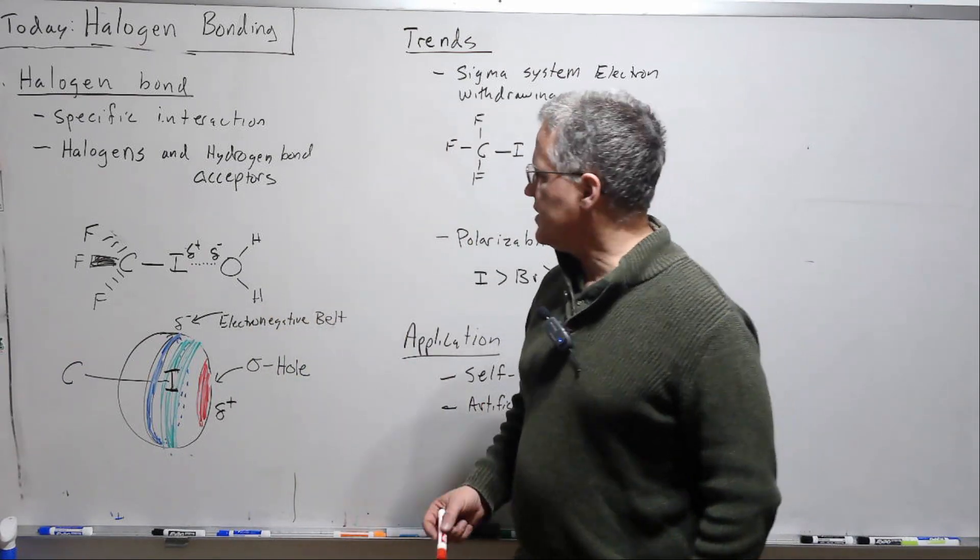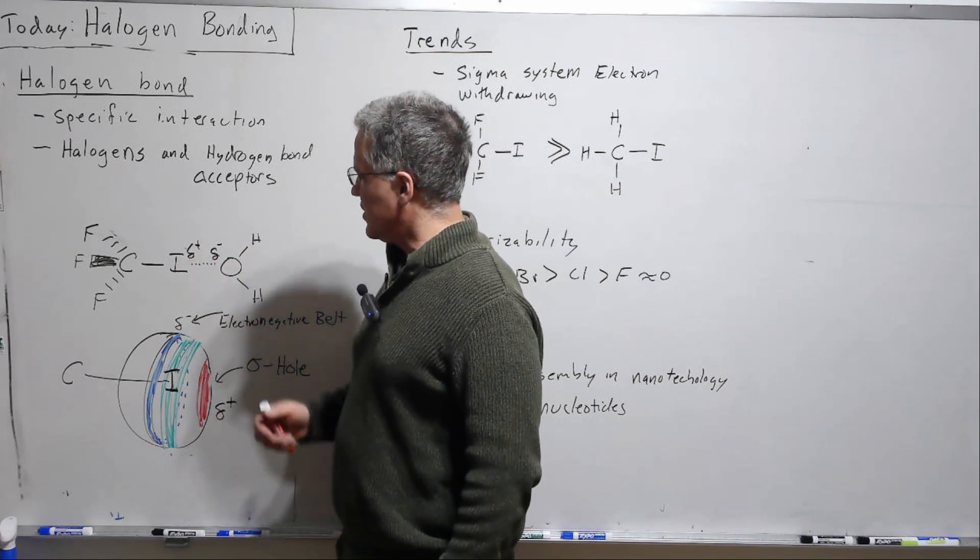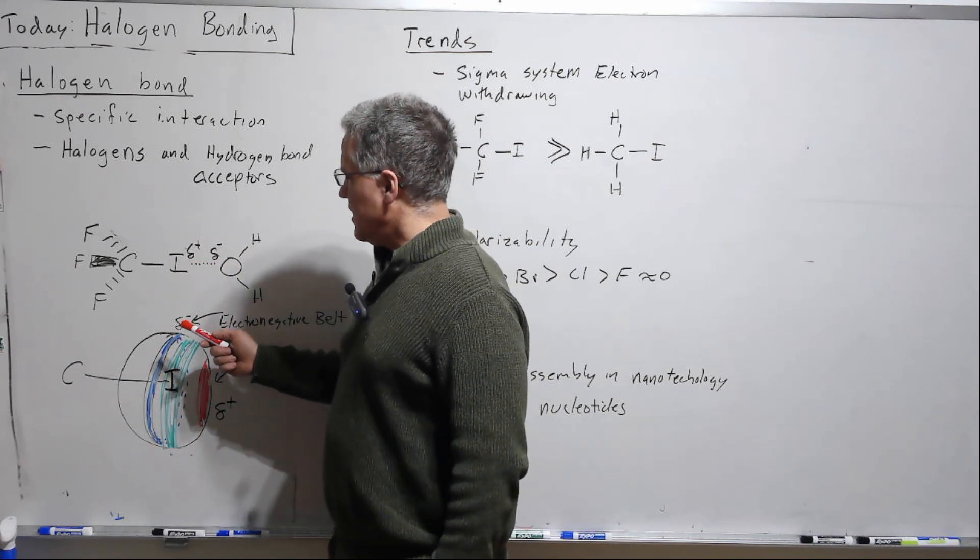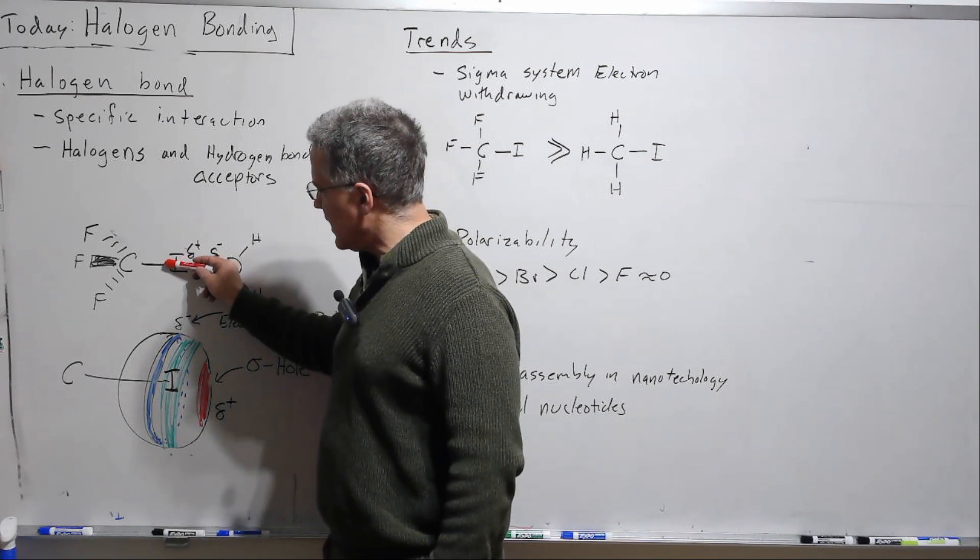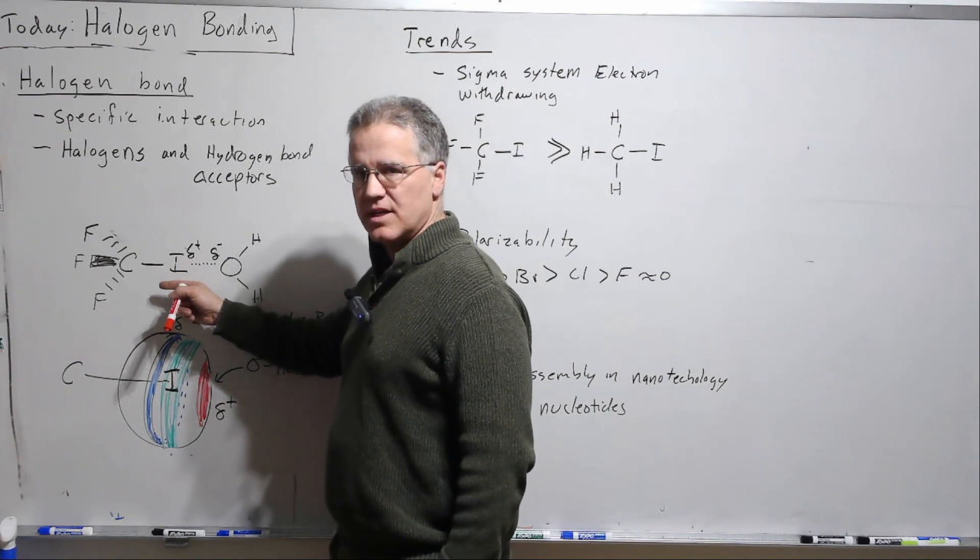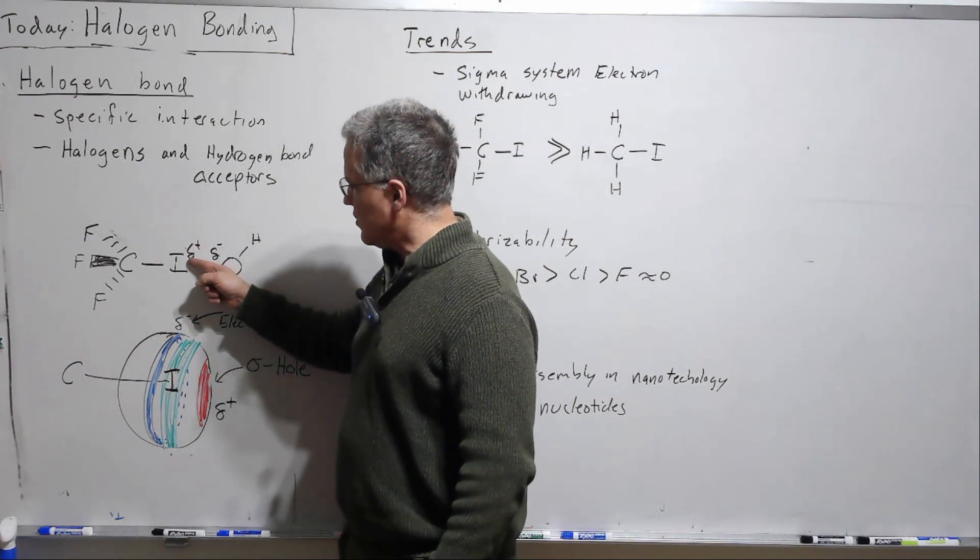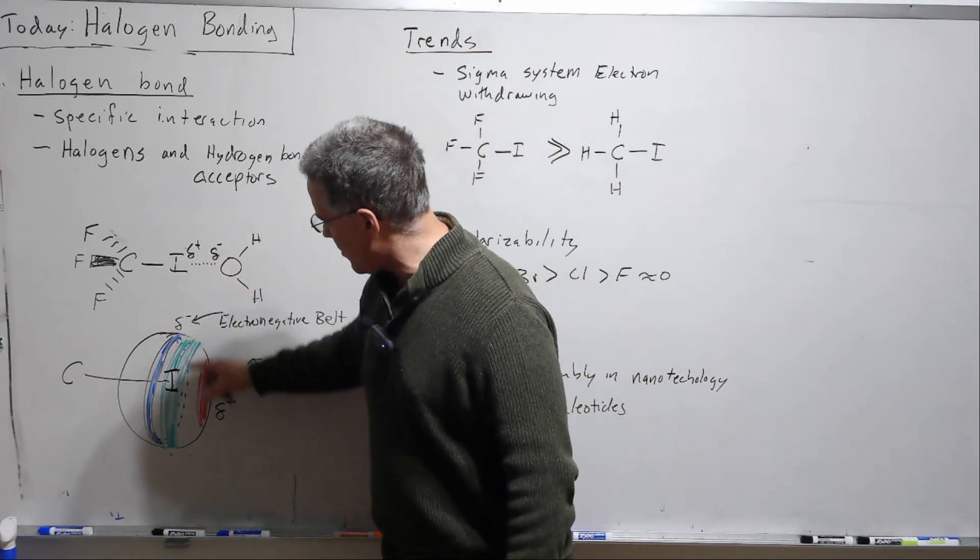And what happens, particularly for the heavier halogens like iodine, is that there is electron withdrawing through the sigma bond into the sigma bond here that leaves on what's called the distal side or the other side of that bond, so I'm going to blow up on here.